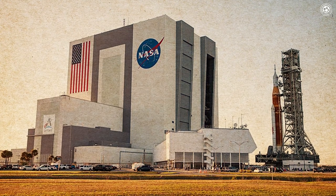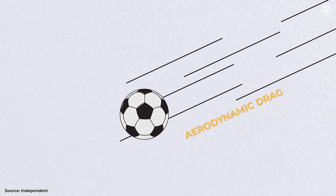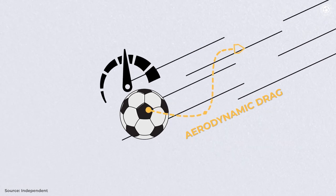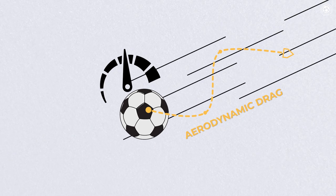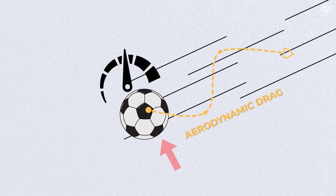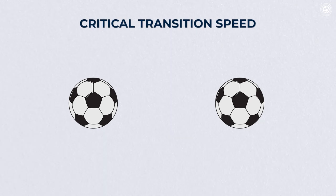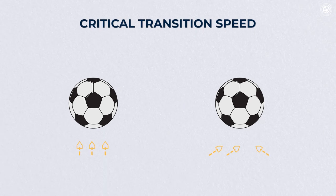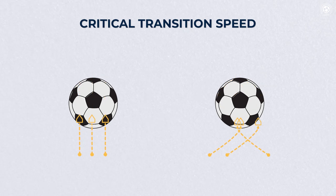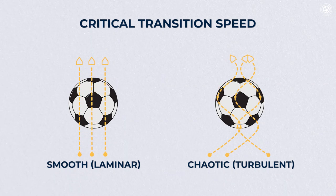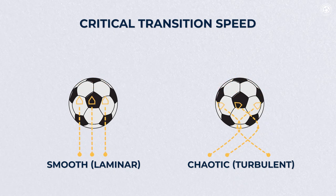Experts at NASA later determined what the issue was. When a football is launched into the air, it faces the force of aerodynamic drag, a formidable resistance that can significantly affect its speed and trajectory. The magnitude of this drag force depends on various factors, including the characteristics of the object itself and the properties of the air through which it moves. In addition, when it comes to objects moving through the air, there is the concept of critical transition speed — the velocity at which the airflow around the object shifts from being smooth and laminar to turbulent and chaotic. This transition is of utmost importance because it can profoundly affect the object's behavior.